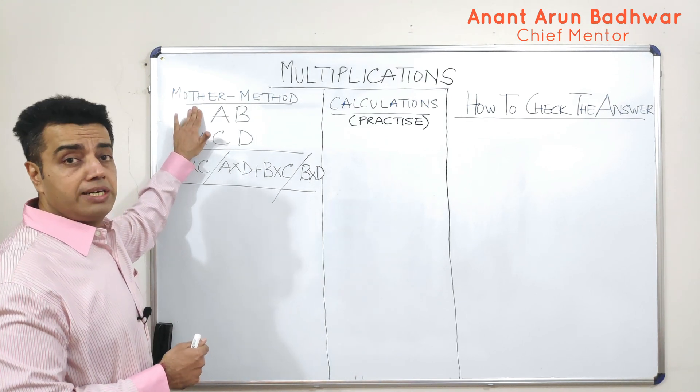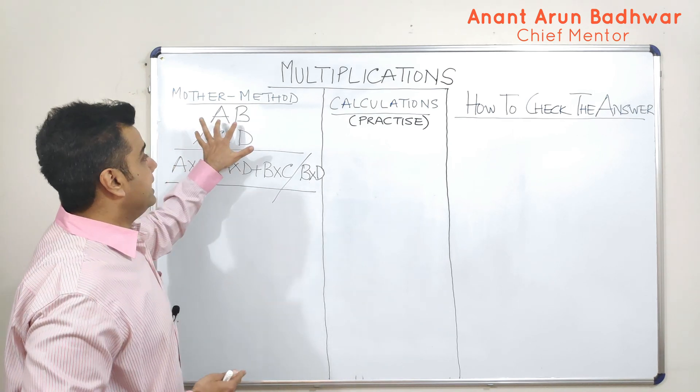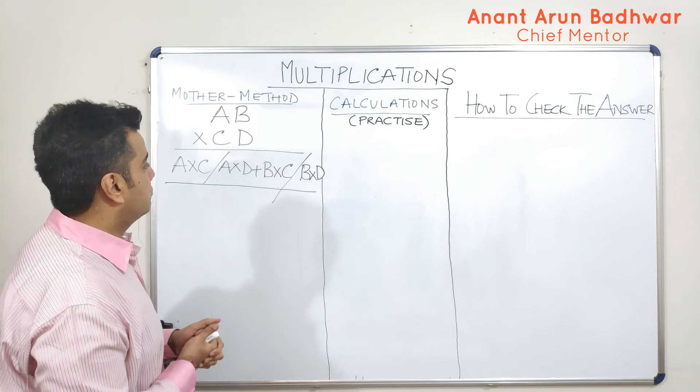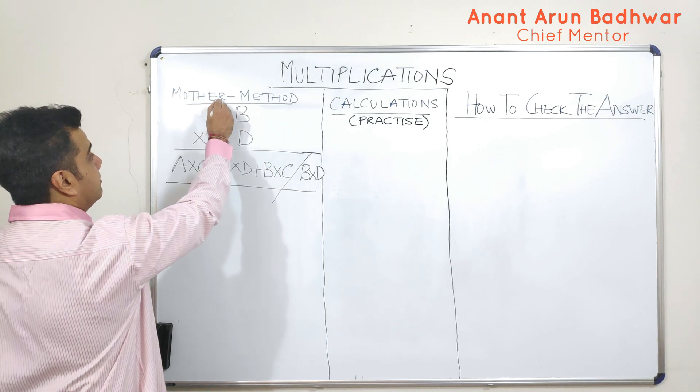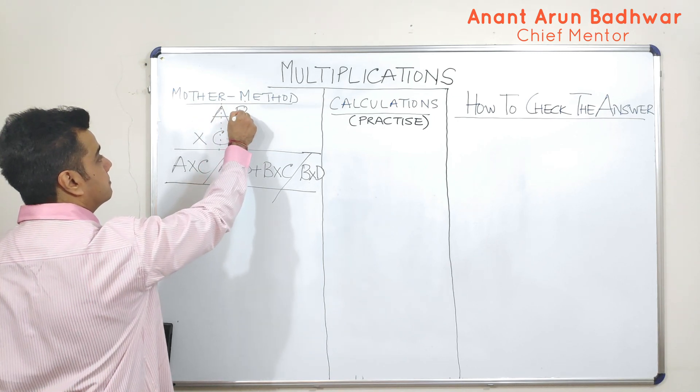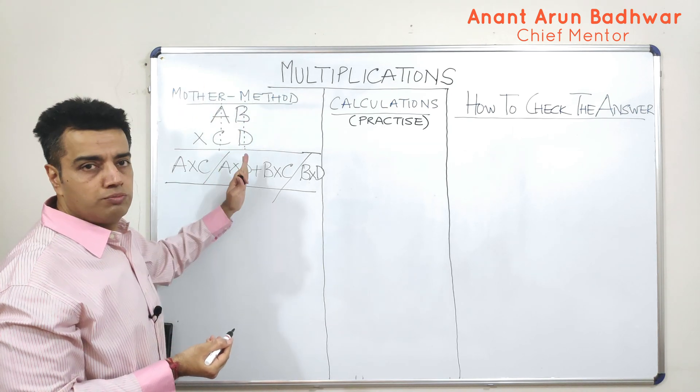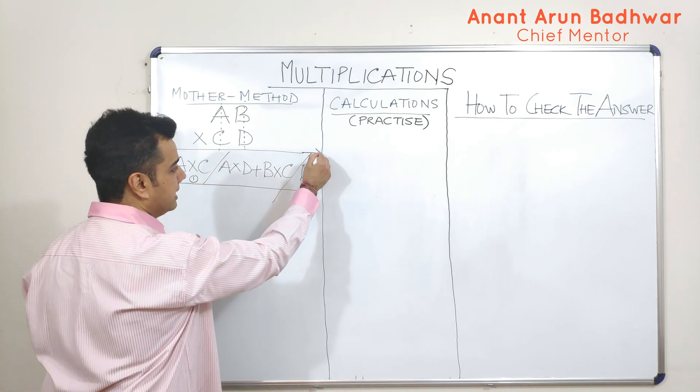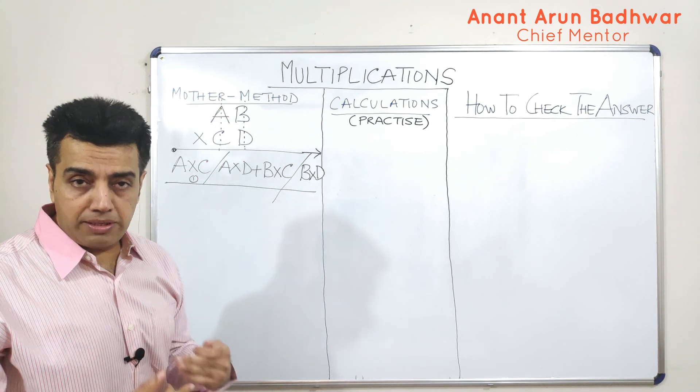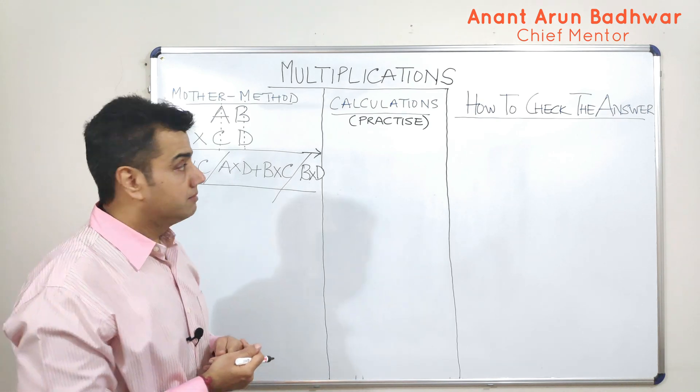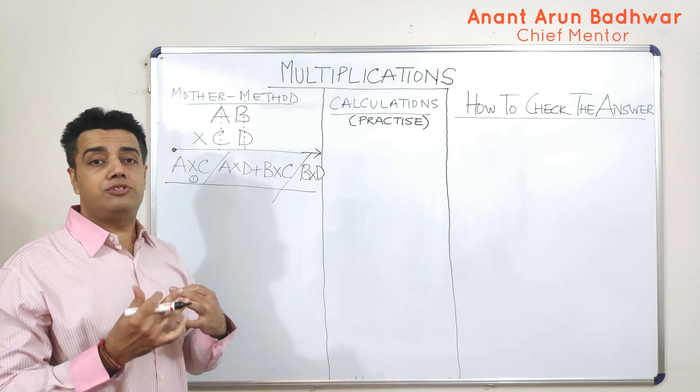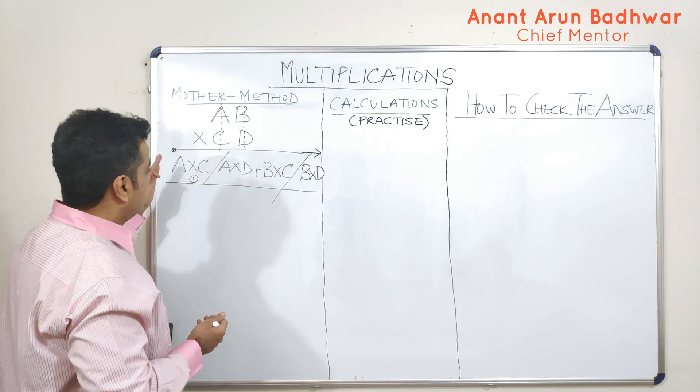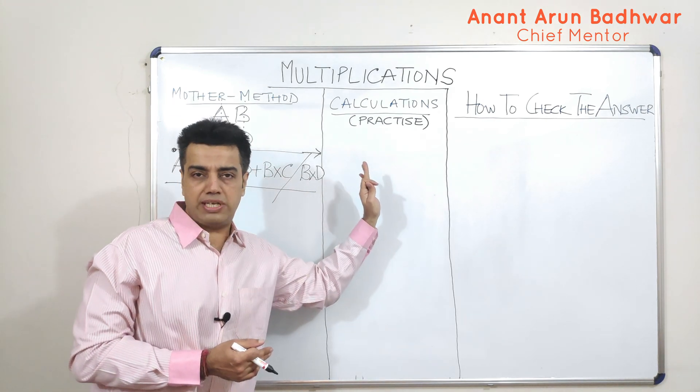Starting off with the basic method, which I call the mother method. What I'm doing here is, I am taking a double-digit number as AB and I'm multiplying it with another double-digit number which is CD. Now, in order to understand this better, we will just draw two columns. So, let us say this is column one and this is column two. First, we will start off with the first column. I'm starting from the left-hand side to the right-hand side.